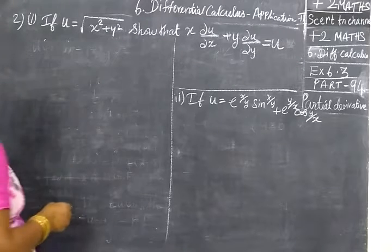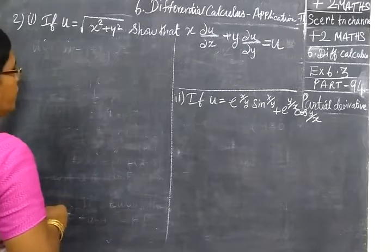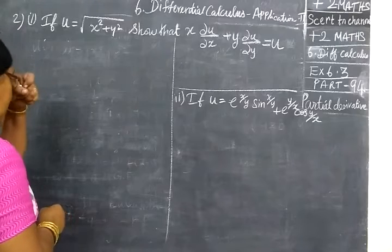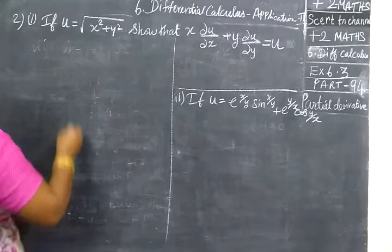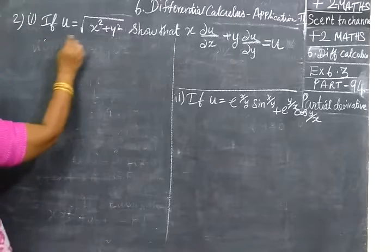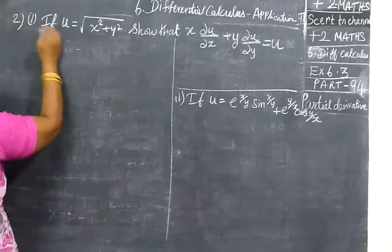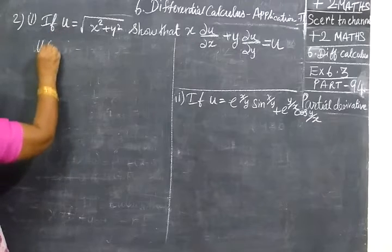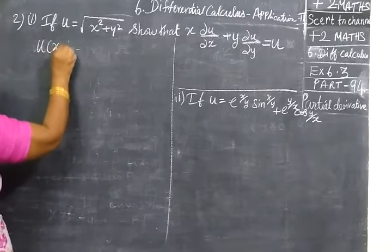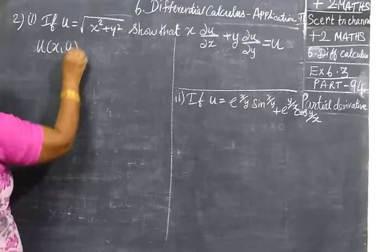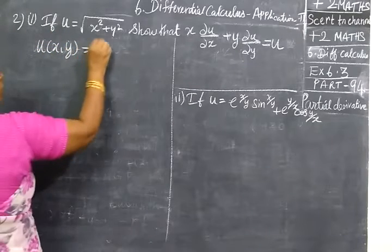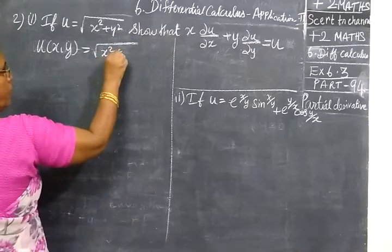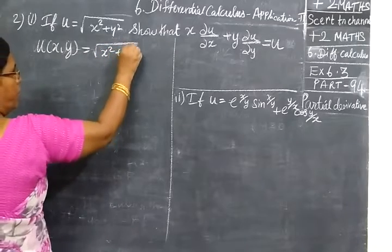Now, we take the second sum. We write it as u of x, y equal to root of x square plus y square.